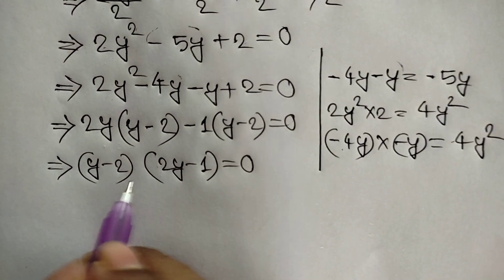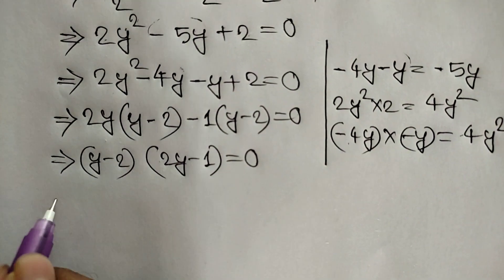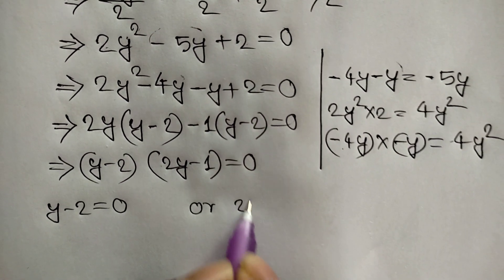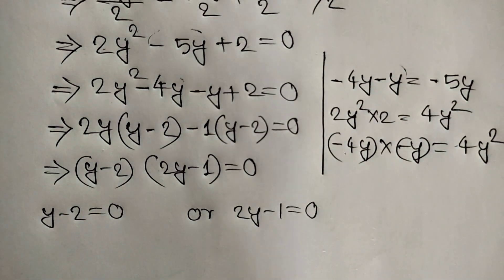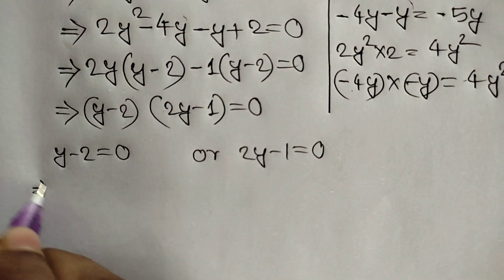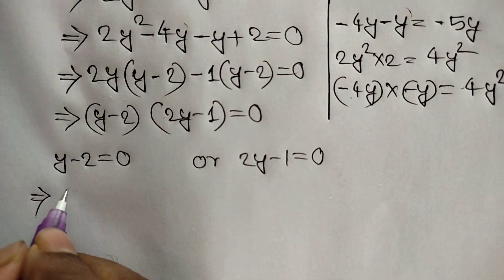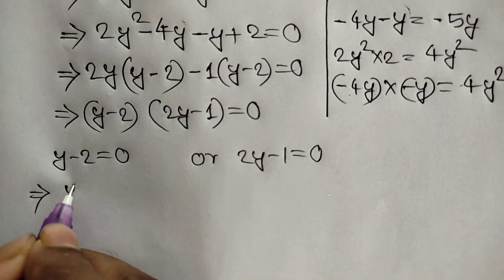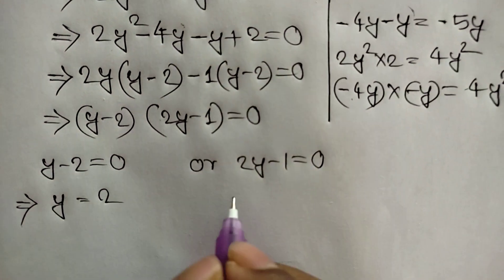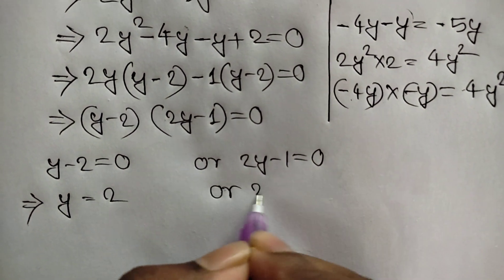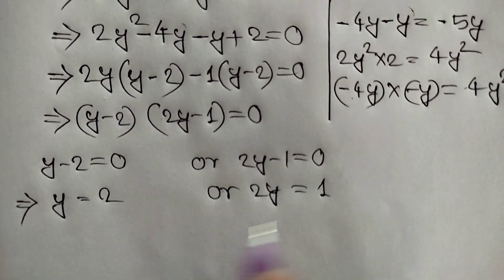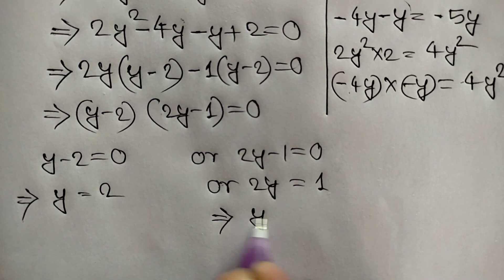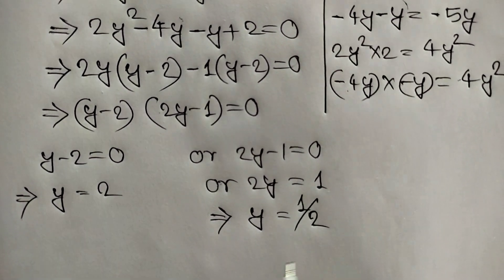Now we see there are two cases. Case one: y minus 2 is equal to 0. Case two: 2y minus 1 is equal to 0. Solving, we get y is equal to 2, or 2y is equal to 1, which gives y is equal to one half.